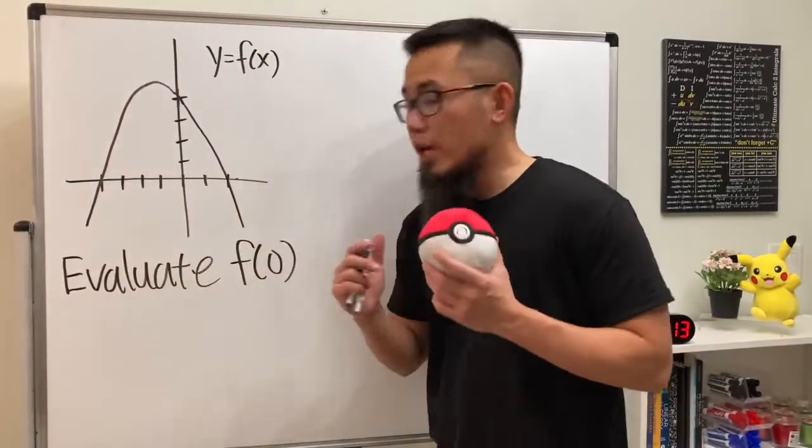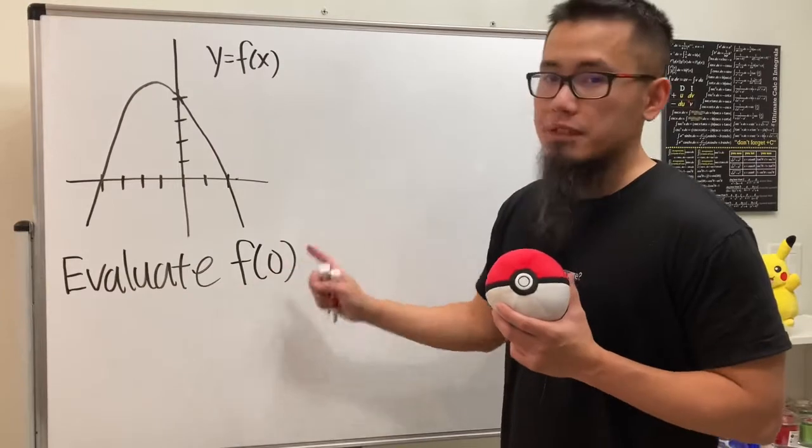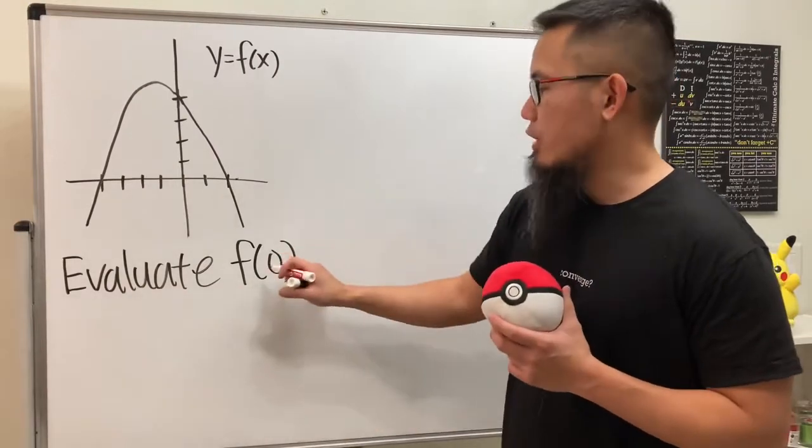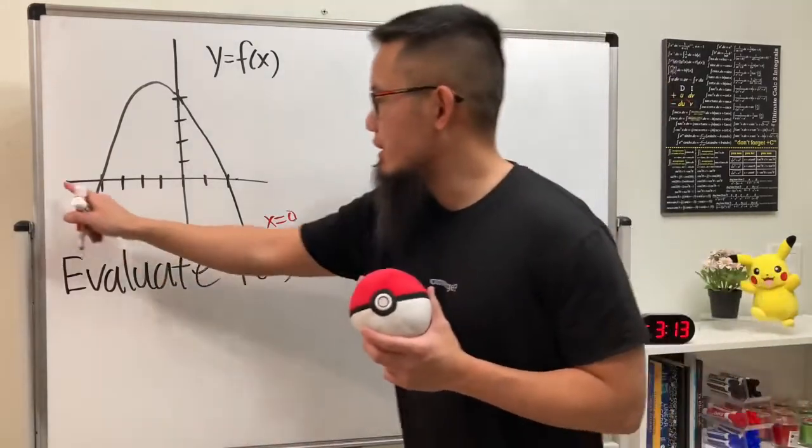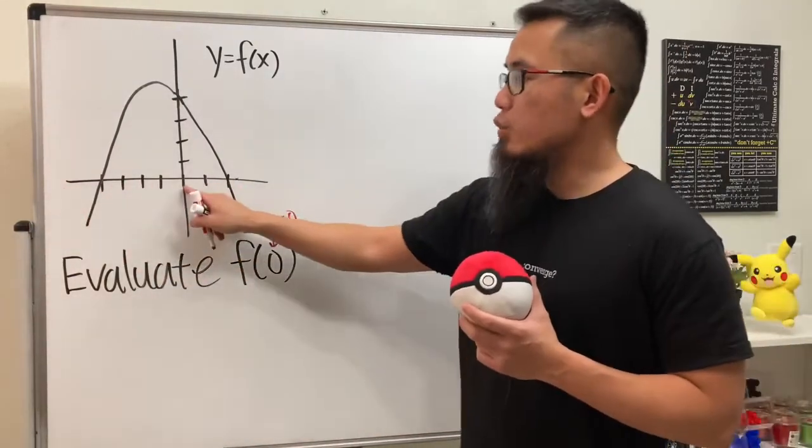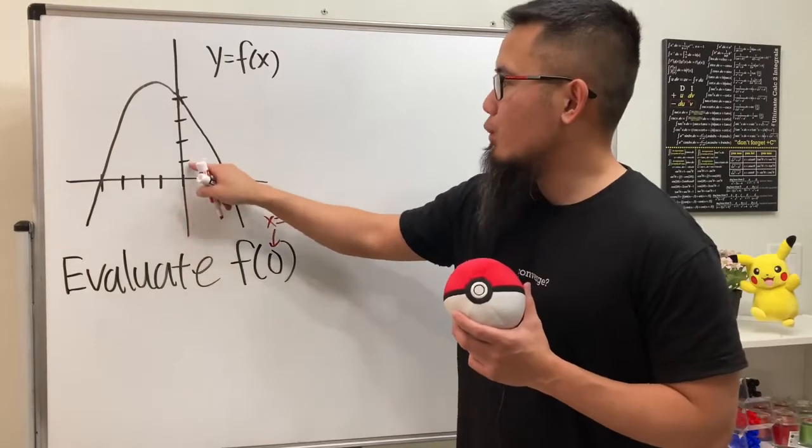Okay, here we are keeping this graph and we are going to find out the value for f of zero. So this notation means when x is equal to zero, we have to find out the y value. As we can see here, we have the x-axis, zero is right here, and then we go up one, two, three.